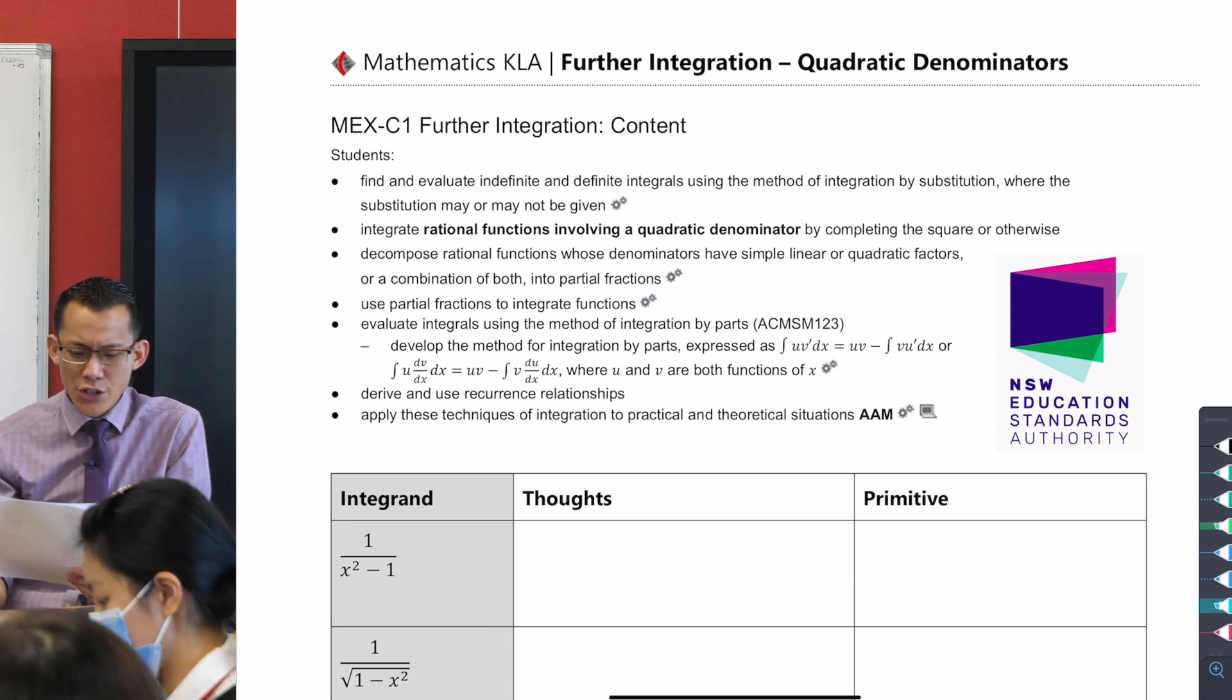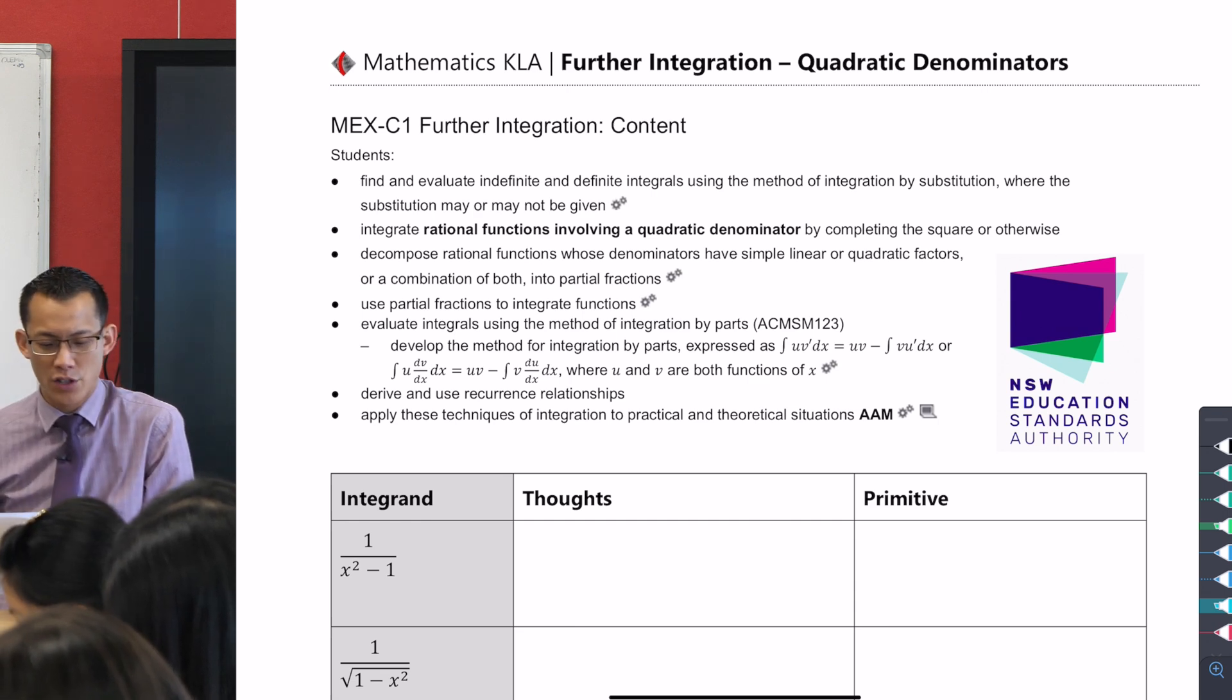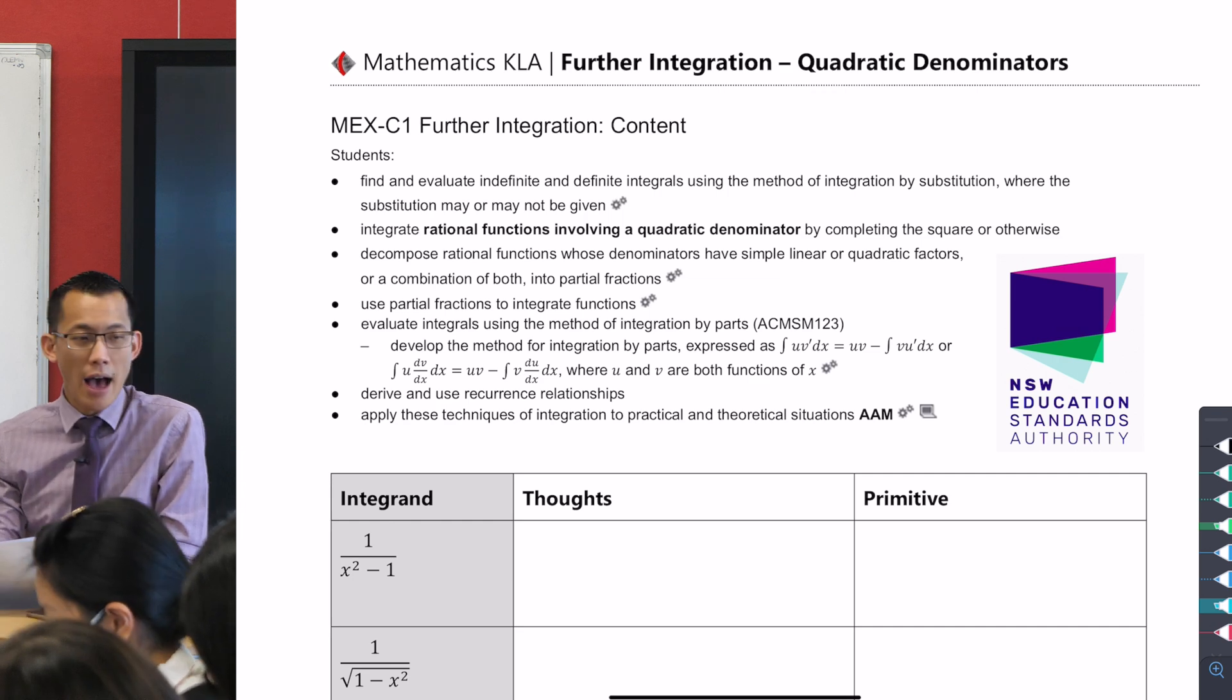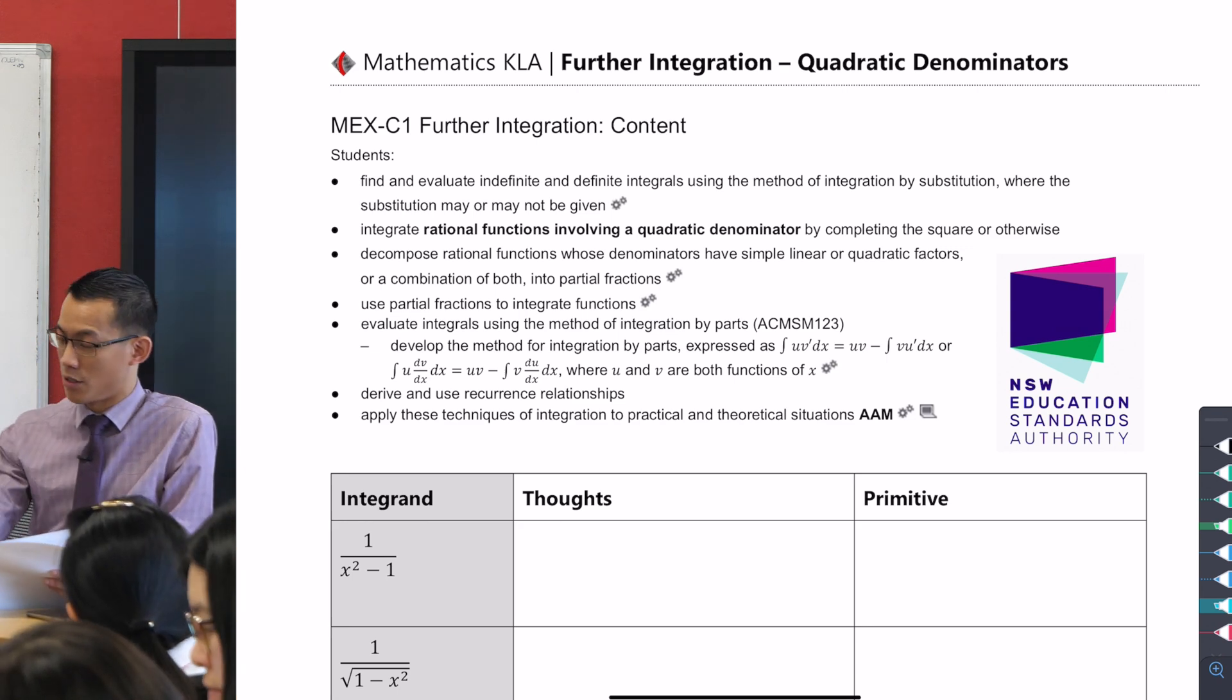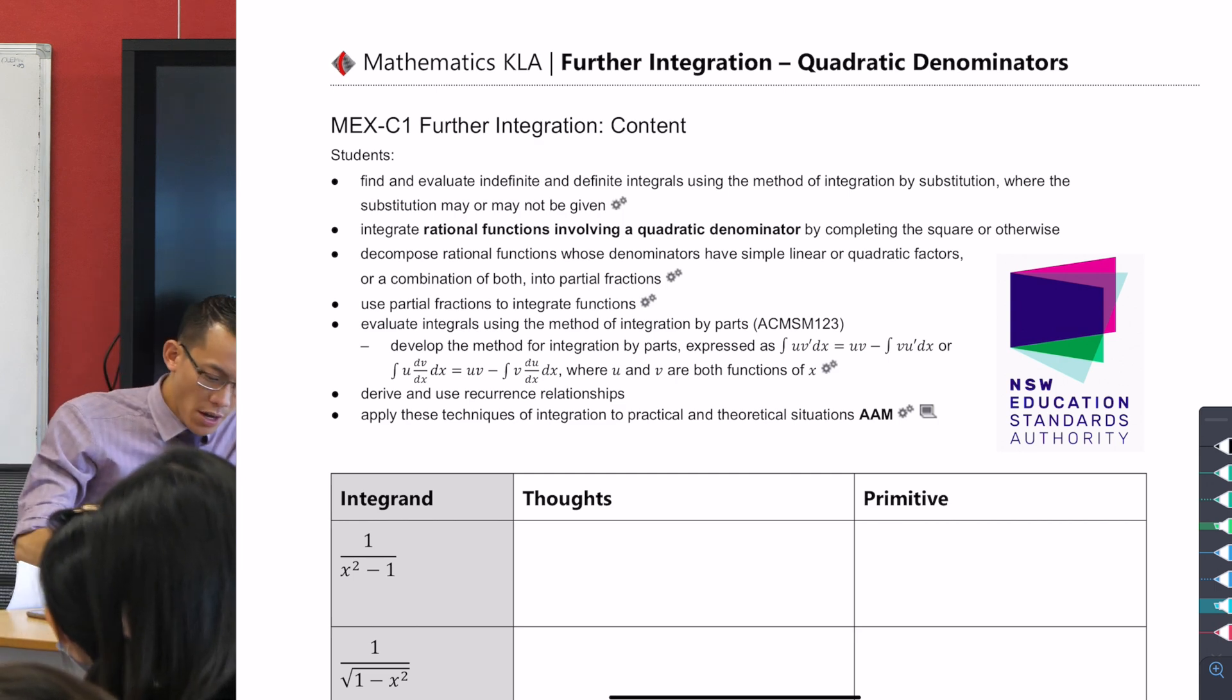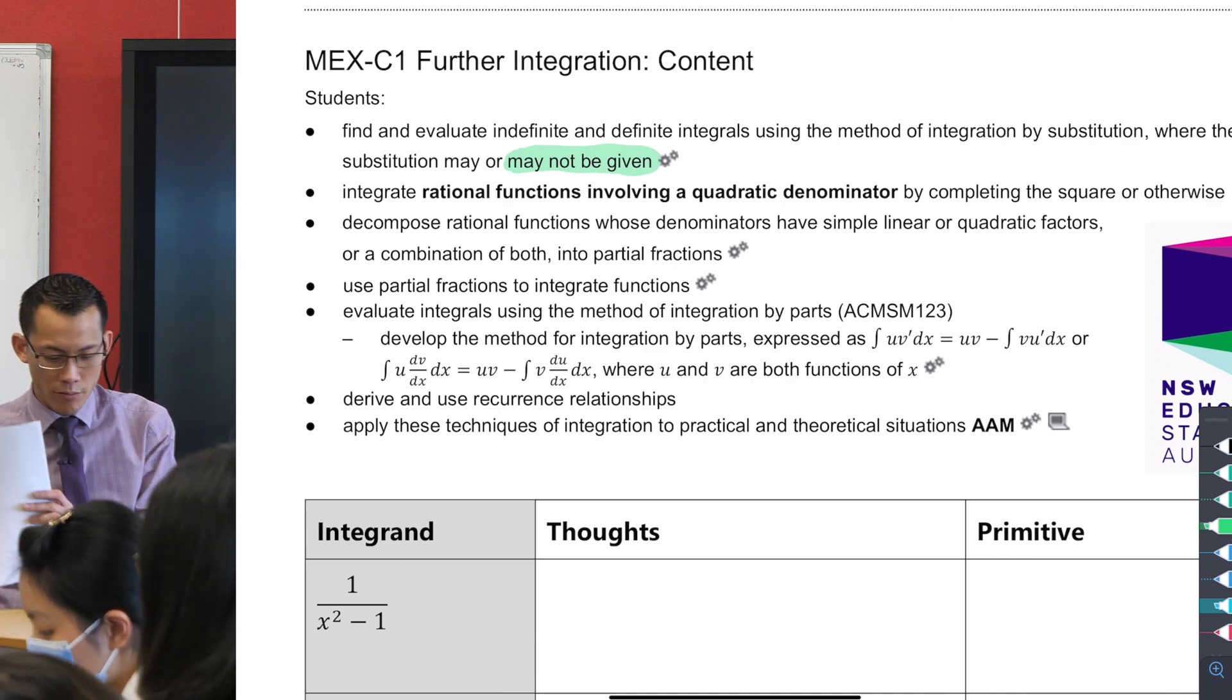I want you to look at these dot points. Think which ones we have looked at, which ones we've explored, and which ones we have not yet. Look at the first dot point—does that sound familiar? I would have called this, in fact I did call this, unspecified substitution in Extension 1. We've looked at finding integrals using the method of integration by substitution, but the substitute was already given to you in Extension 1. You may like to highlight—the substitution may not be given. That's the unspecified part that makes Extension 2 Extension 2.